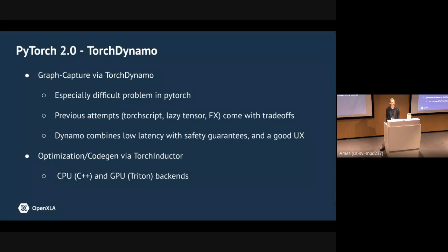There have been a few previous attempts: Torch Script did semantic analysis and tried to build a representation of the Python, requiring us to understand every feature of Python — people would get errors, models wouldn't be compilable, they'd have to file bugs. Then Torch Script's tracing would trace most of the time by recording a sequence of operations but wasn't safe to use. Then lazy tensor — developed here at Google — records a trace and computes a hash so it's safe. And FX captures a graph in a tracing style but again lacks safety.